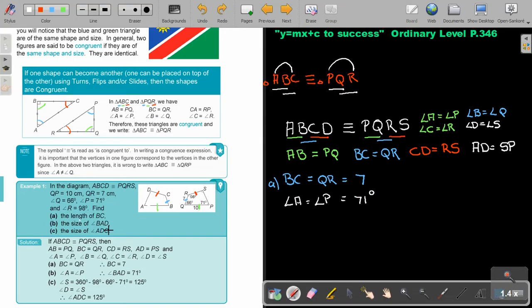The size of angle ADC. So, it's actually angle D. So, angle D is equal to angle S. But now, it's that one that's not given. So, quadrilateral angles add up to 360. So, 360 minus 125. So, that angle will be 125.